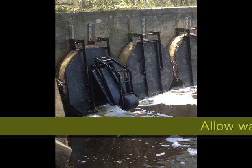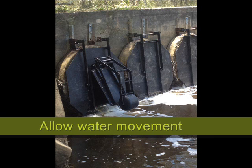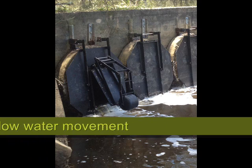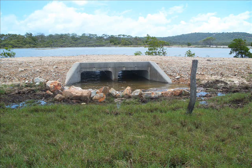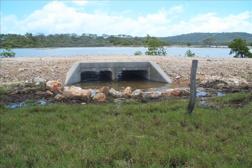You can improve fish habitat and fish passage by actively managing structures like floodgates or installing simple bridges and open velocity culverts that allow free water movement.